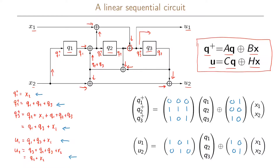We have now described our linear sequential circuit in matrix form. The first matrix is called a, the second is called b, then we have matrix c, and matrix h. We are now going to see how we can minimize this linear sequential circuit — meaning we want to implement the same behavior using as few D elements as possible.